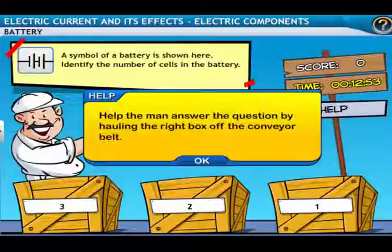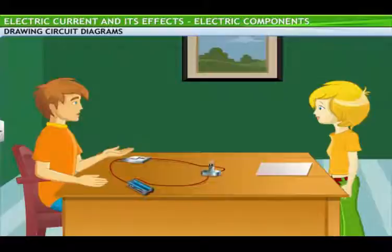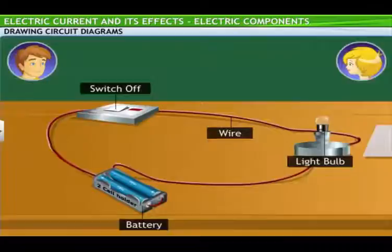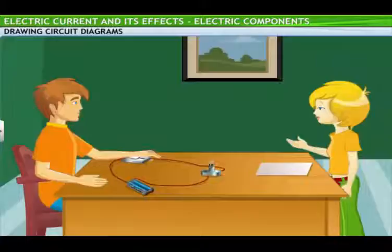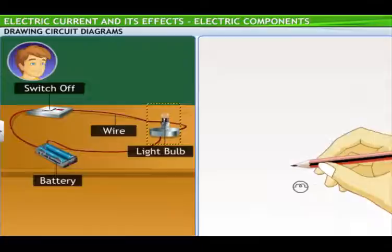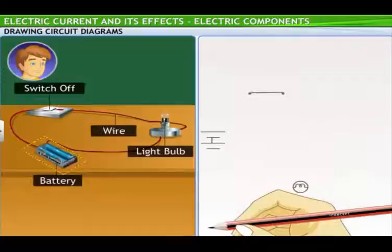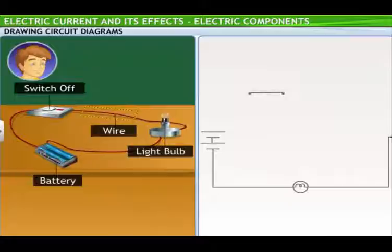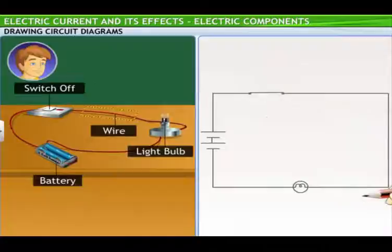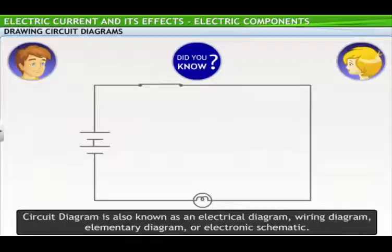Tina, now that you're familiar with the symbols used for different components in a circuit, do you think you can draw a circuit diagram? For instance, look at this circuit that I just set up. Can you make a drawing of it? Of course. Let me draw and show it to you. Here's the bulb, then the switch, which is in the off position, then the battery with two cells in it, and finally the wires connecting them all. There, I have the circuit diagram ready. Did you know, a circuit diagram is also known as an electrical diagram, wiring diagram, elementary diagram, or electronic schematic.